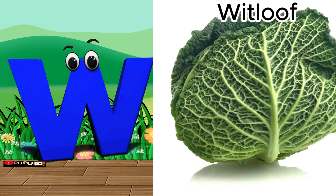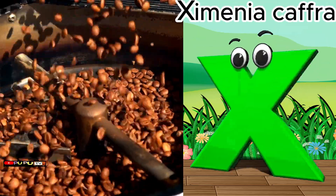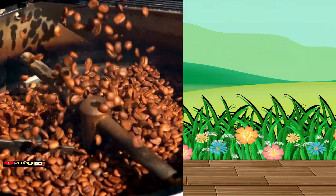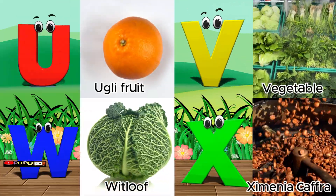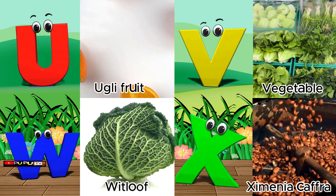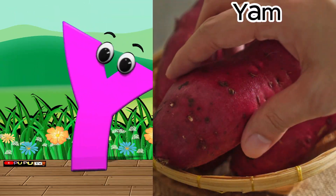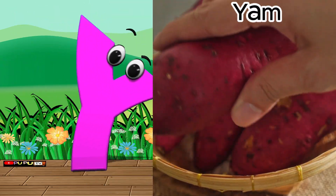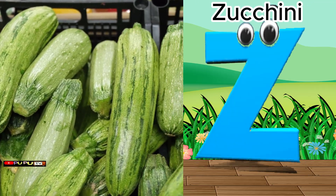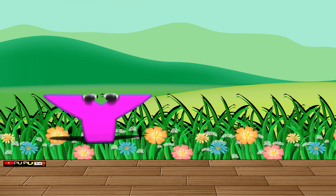W is for whitloaf. X is for zymeniacaf. Y is for yam. Z is for zucchini.